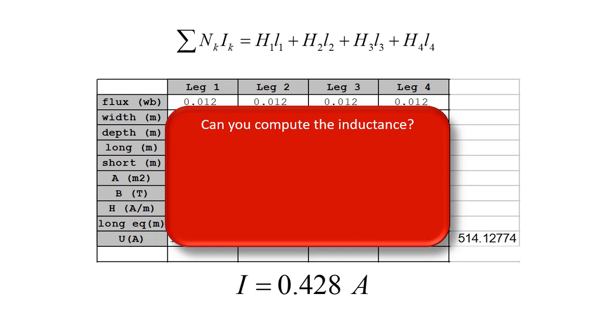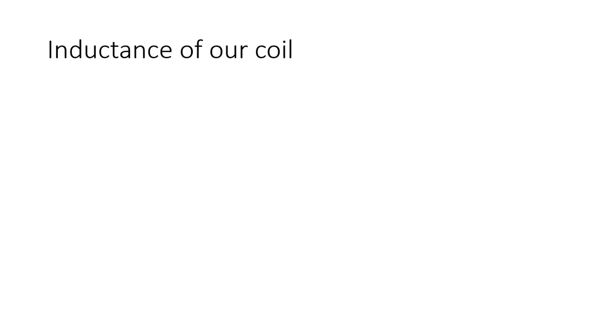Can we compute the inductance of that coil? Let's see. To compute the inductance, we need the current. We know the current. We need the flux linkage. Flux linkage. Yes, we need Nφ. Well, we know φ. We know the flux is, what was it? 1.2 milliwebers. And we know the number of turns N. That is 1200. We know the current 0.428. Of course, we can compute the inductance. Let's compute the inductance of that magnetic coil.